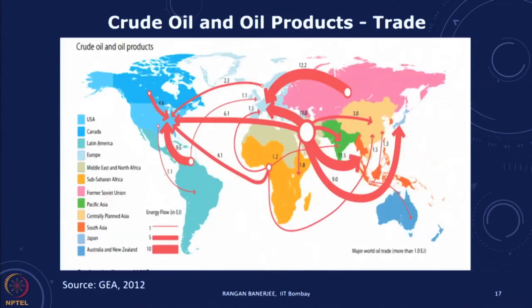We are in an interconnected world. A map showing the trade in oil and oil products makes very clear, through the magnitude of arrows representing volumes, that almost all the oil is coming from the Middle East. There are significant geopolitical issues related to this — the Middle East is often in turmoil, and when there are problems this affects the availability of oil, affects prices, and affects economies in many parts of the world. As we plan our energy systems for the future, we would like to shelter from these kinds of impacts.